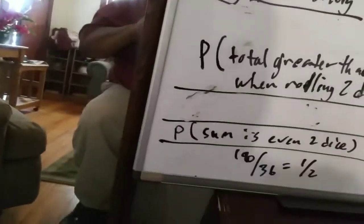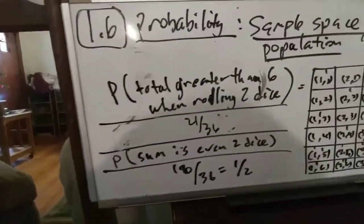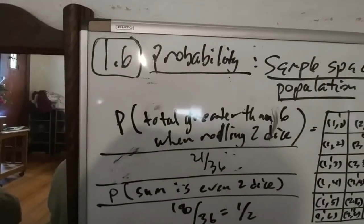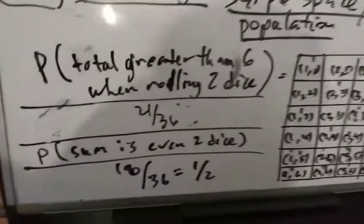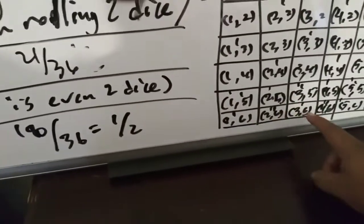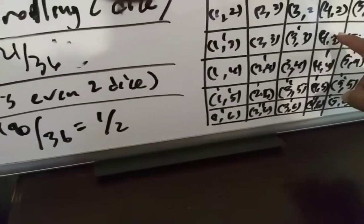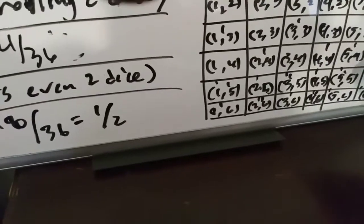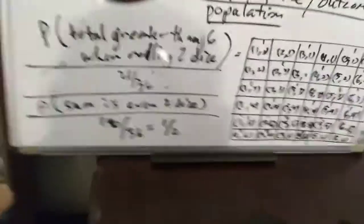21 out of 36. 21 out of 36 greater than 6. Let me just double check that to make sure I'm right. I'm going to try it over again here. We got 1, 2, 3, 4, 5, 6, 7, 8, 9, 10, 11, 12, 13, 14, 15, 16, 17, 18, 19, 20, 21. Yep, 21 out of 36. And that actually reduces. You divide both top and bottom by 3 and it reduces to 7 out of 12. So that should be 7 out of 12.